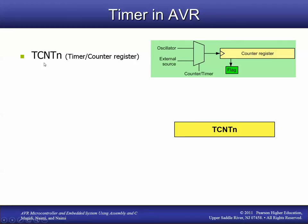First, we have TCNT N, where N is the counter number. In the 320AP there are three counters, so it could be TCNT0, TCNT1, or TCNT2. This is where the actual count is stored. Whenever a signal comes in, this number gets incremented. So TCNT is where we keep track of the number of instances.